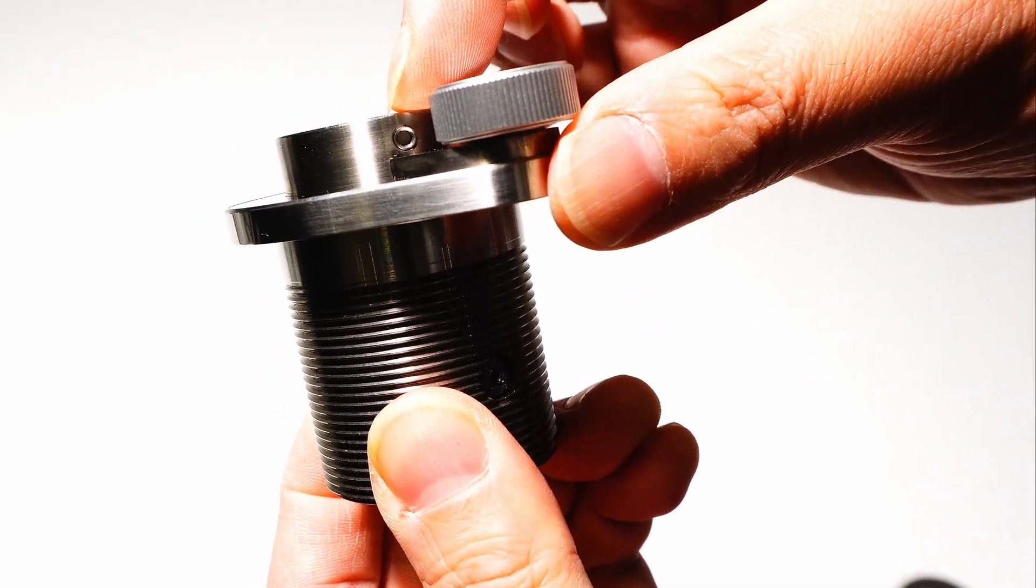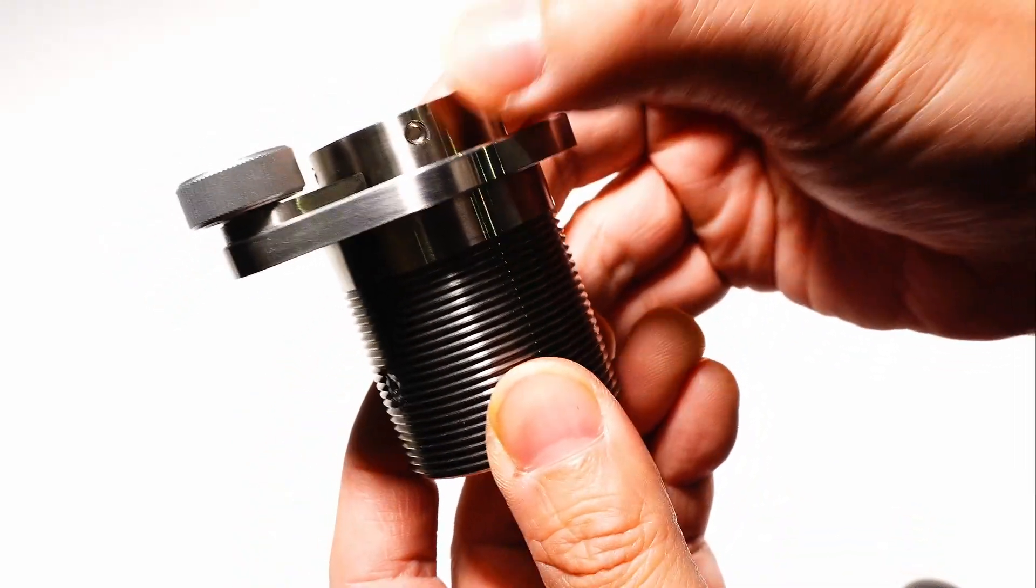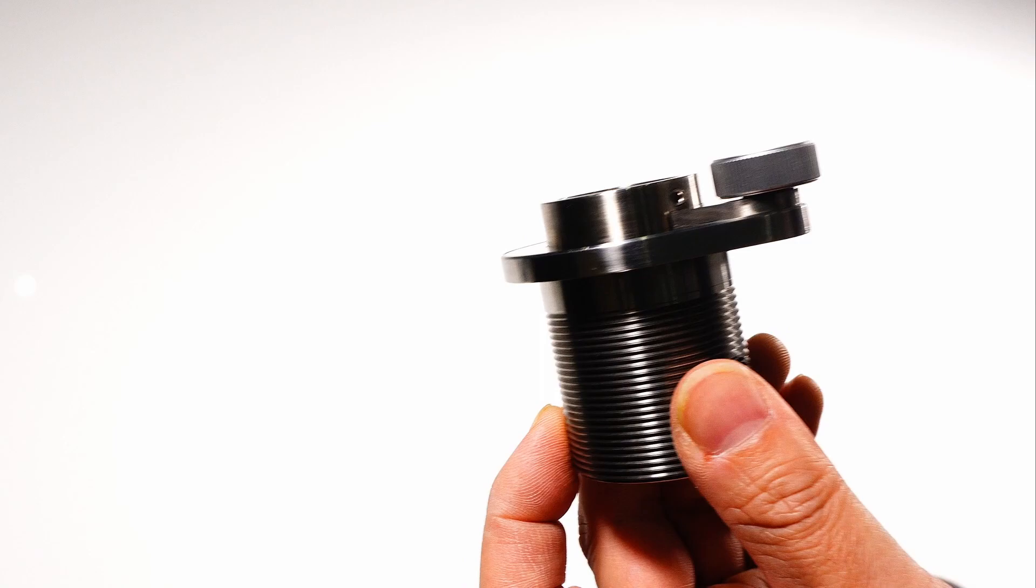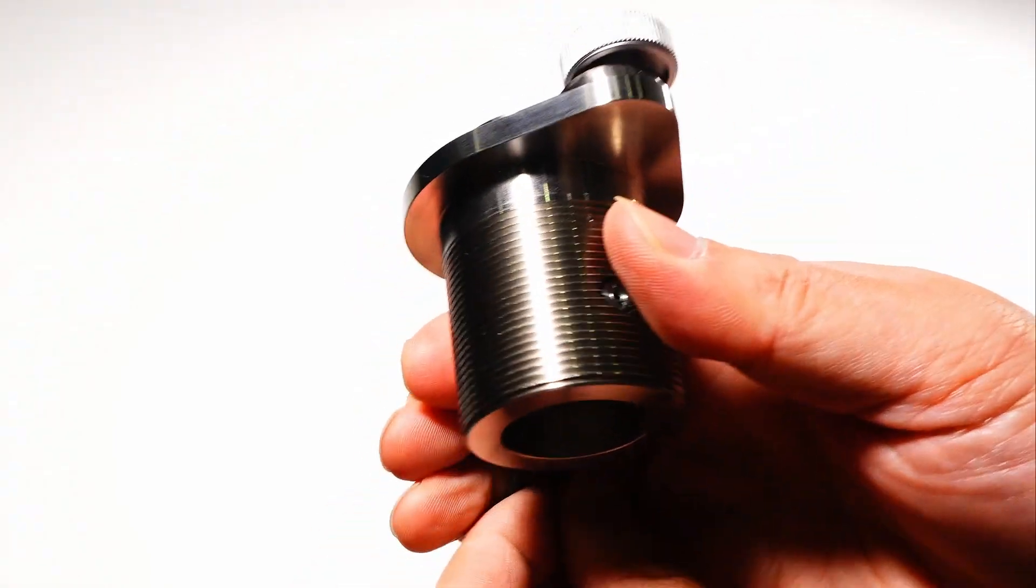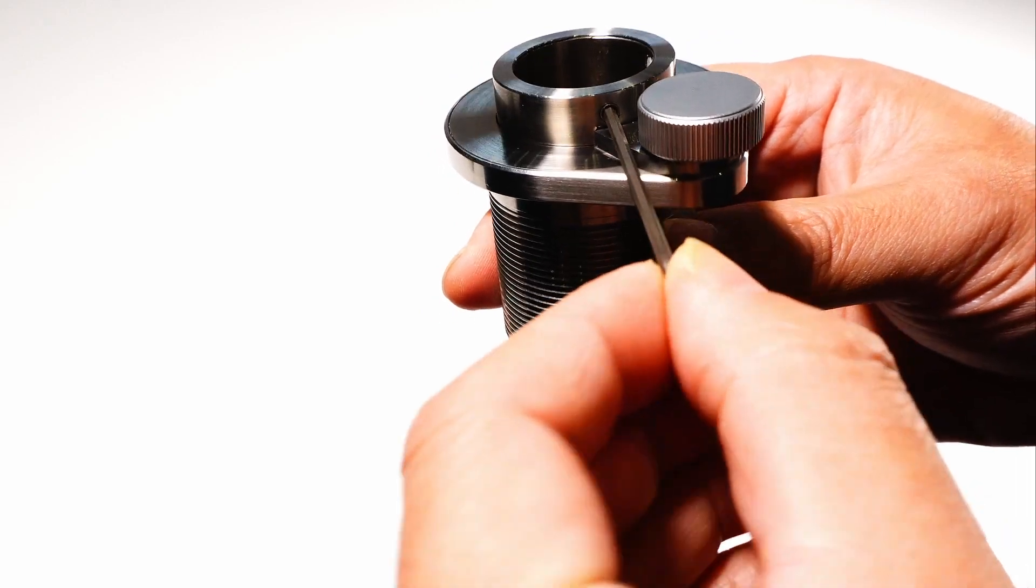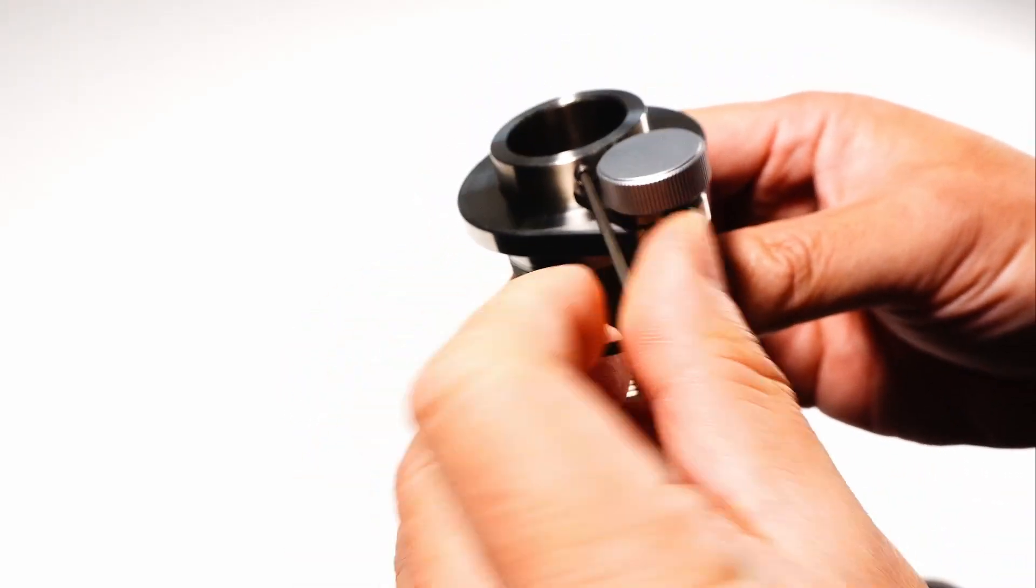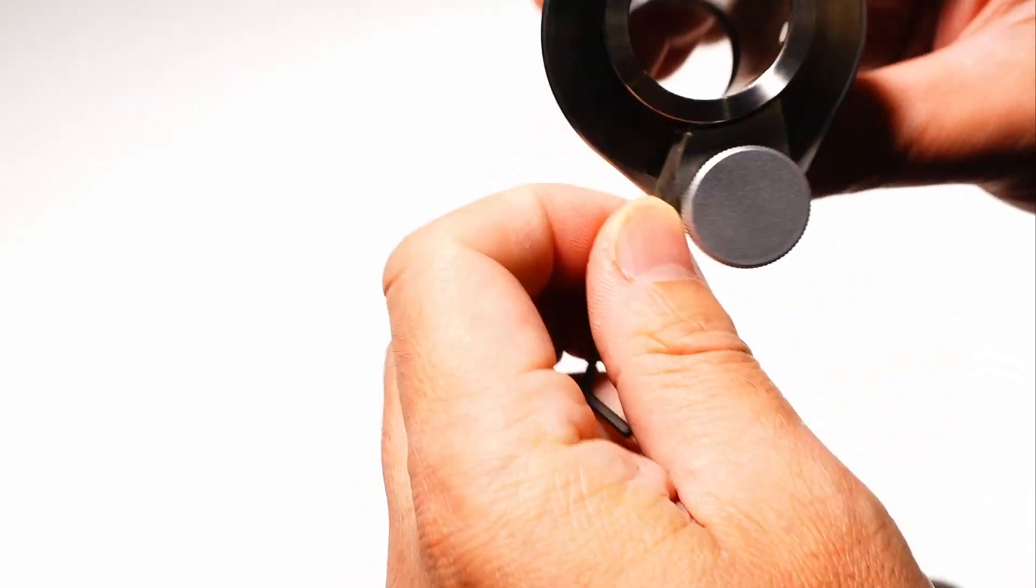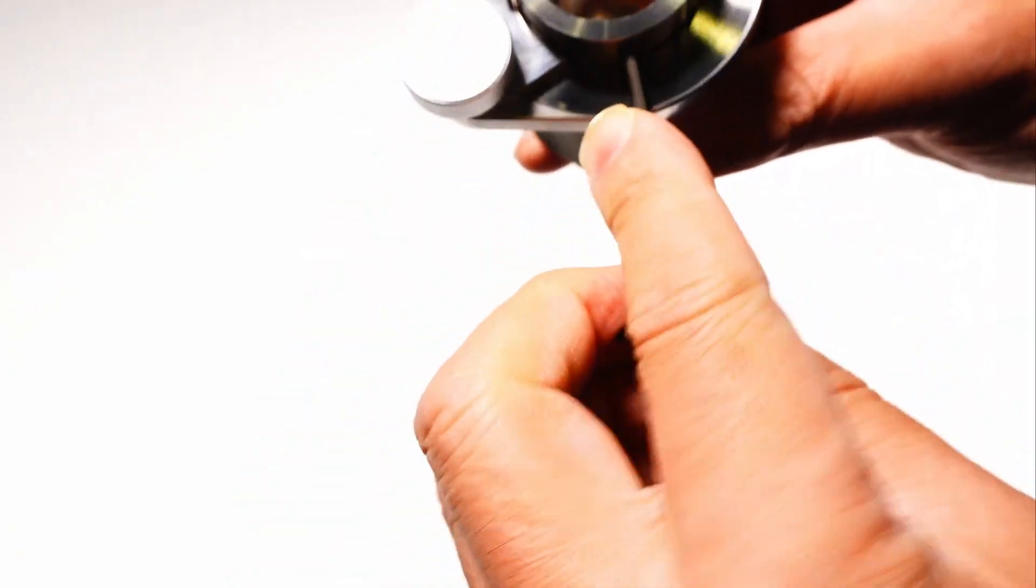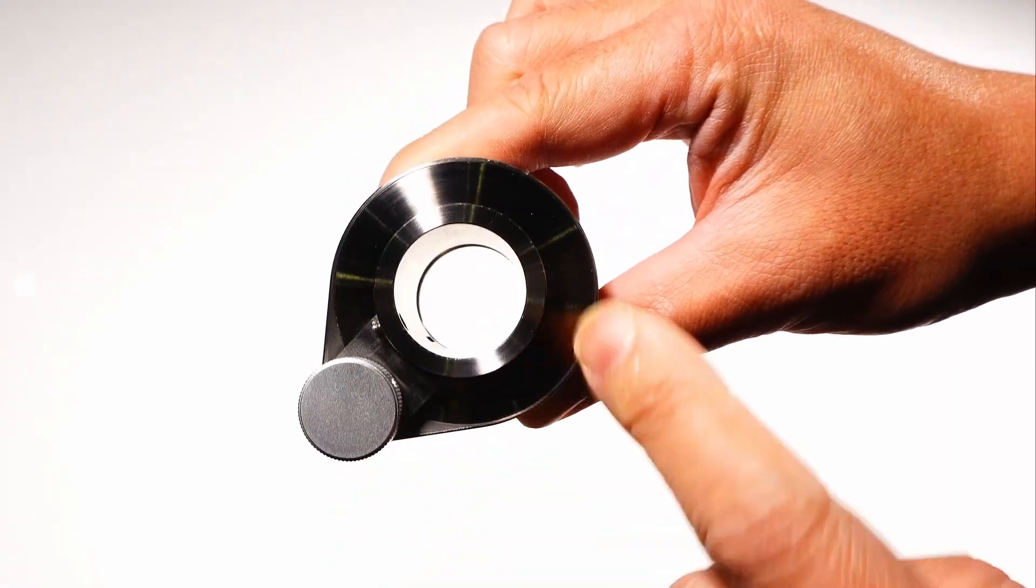There are two screws, on the side and on the back. Loosen these two screws by using the supplied hex wrench, so that you can install the arm through the hole.